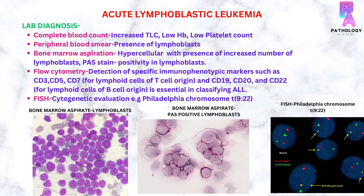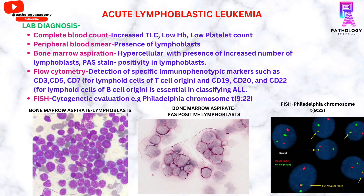Flow cytometry can be done to detect specific immunophenotypic markers such as CD3, CD5, or CD7 for lymphoid cells of T-cell origin, and CD19, CD20, and CD22 for lymphoid cells of B-cell origin. This is essential for subclassifying ALL. FISH, or fluorescent in-situ hybridization technique, is used for cytological evaluation — for example, detection of the Philadelphia chromosome or translocation t(9;22), which is seen in cases of ALL.